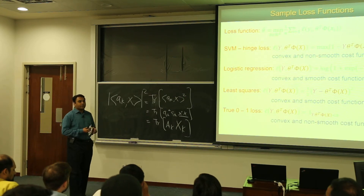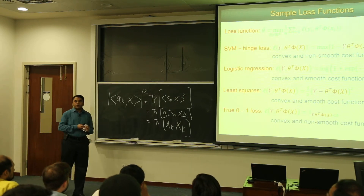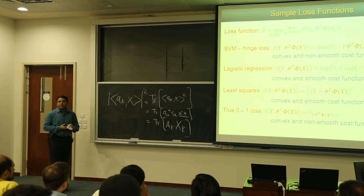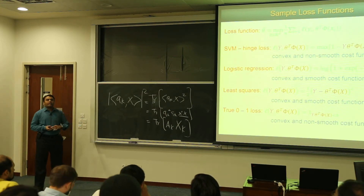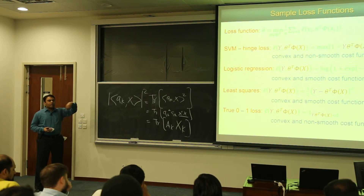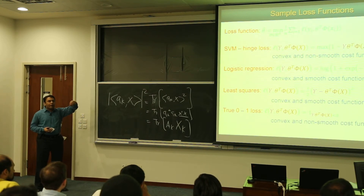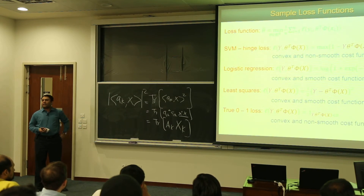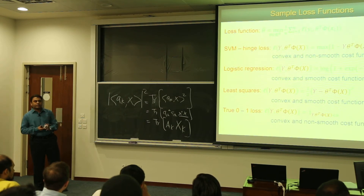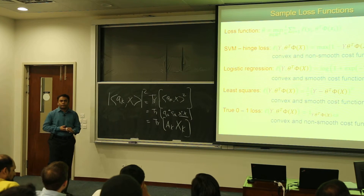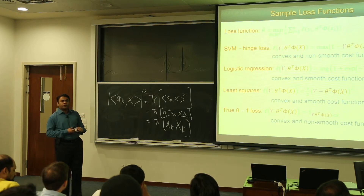These are mathematical tricks. We assume that in a very high-dimensional space, these become points, and a linear classifier is the best choice — you can assume linearity very easily. This is essentially the kernel trick in machine learning.